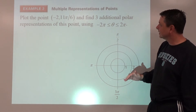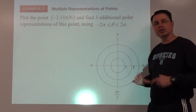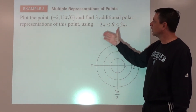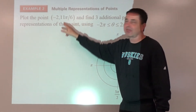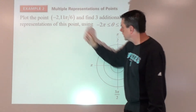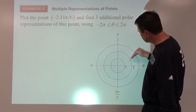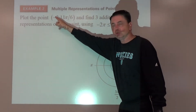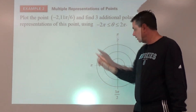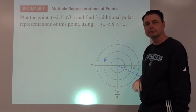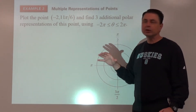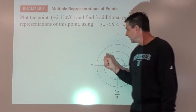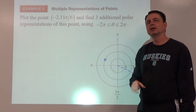Example number two: plot the point and then find three additional representations in polar coordinate form that give you the same location, as long as theta is within the given range. We start with eleven pi over six — rotating around, that's here in the fourth quadrant — and negative two means don't go that direction, go the other way, and we wind up at our point. Pause here and think of three other ways to write this.